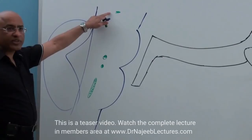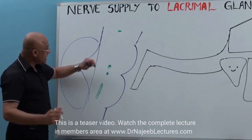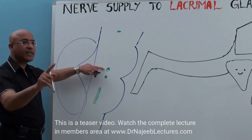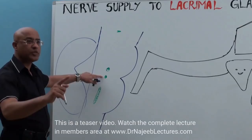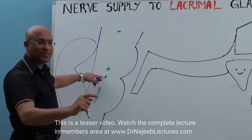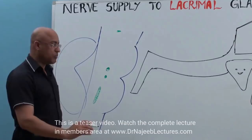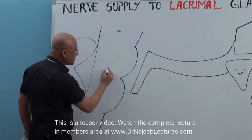Now, out of these: the Edinger-Westphal nucleus gives parasympathetic supply to the ciliary ganglion. The superior salivatory nucleus gives parasympathetic supply through the seventh nerve to the pterygopalatine ganglion and submandibular ganglion. The inferior salivatory nucleus gives parasympathetic supply to the otic ganglion. And the dorsal nucleus of vagus gives parasympathetic supply to so many structures in the head, neck, thorax, and abdomen — we will not focus on that at this moment.